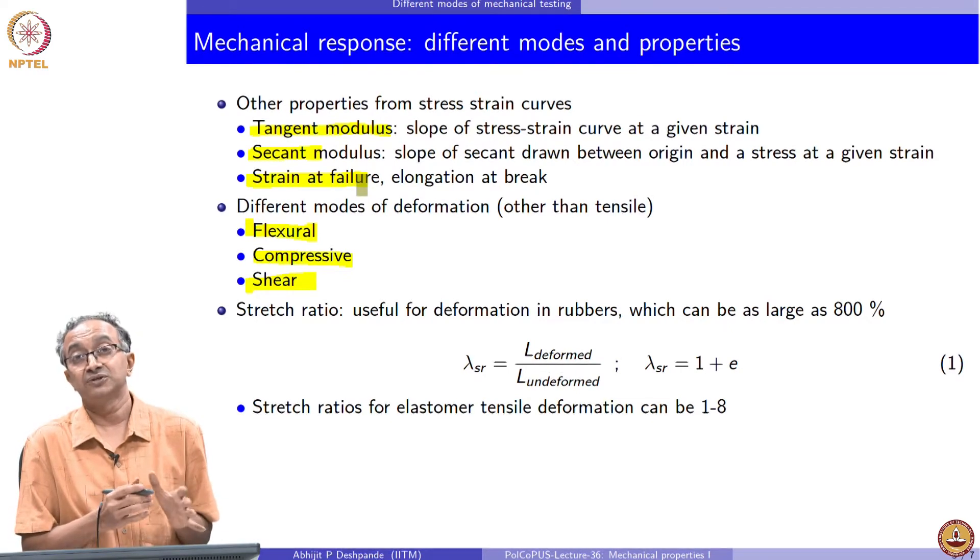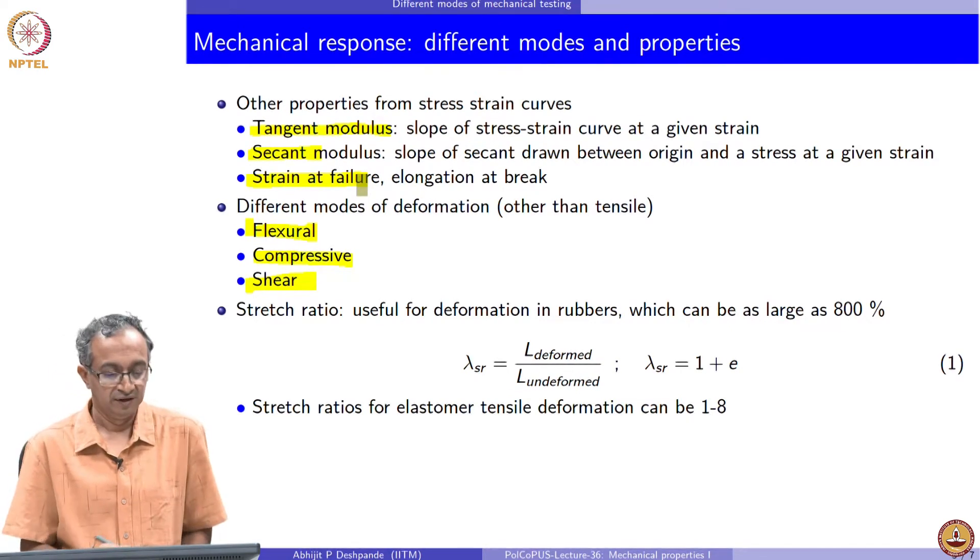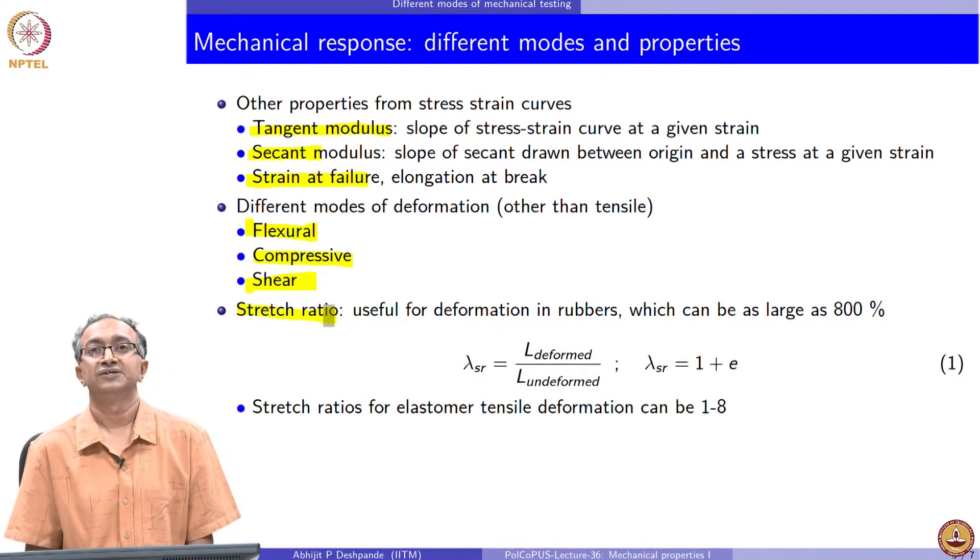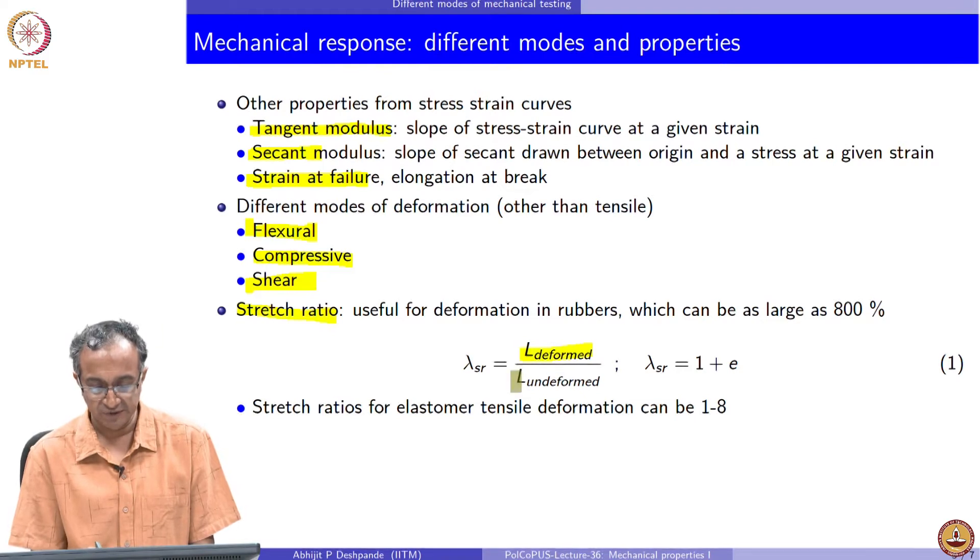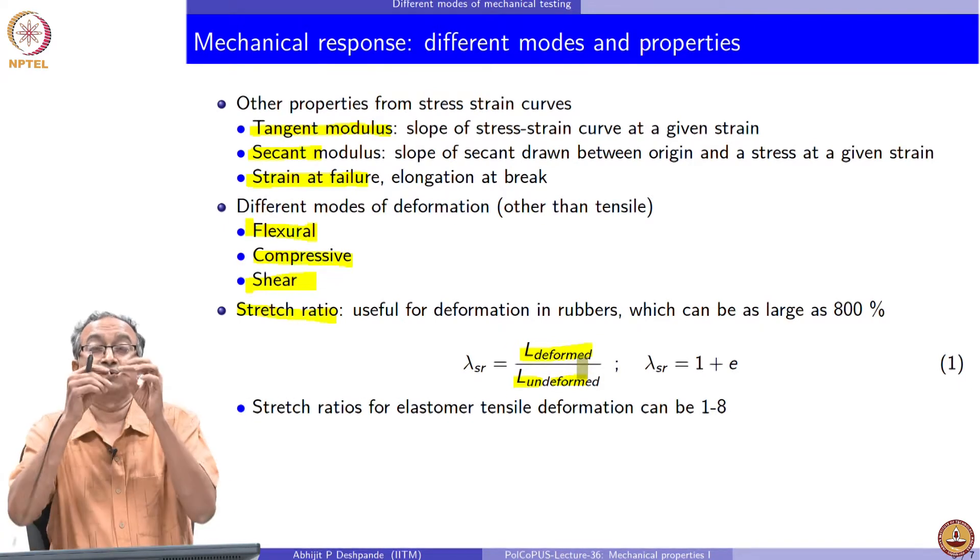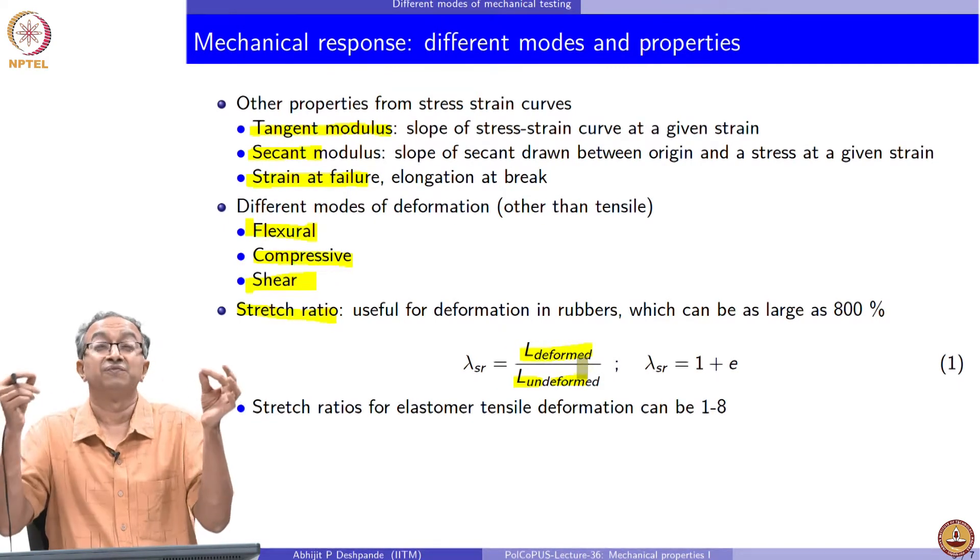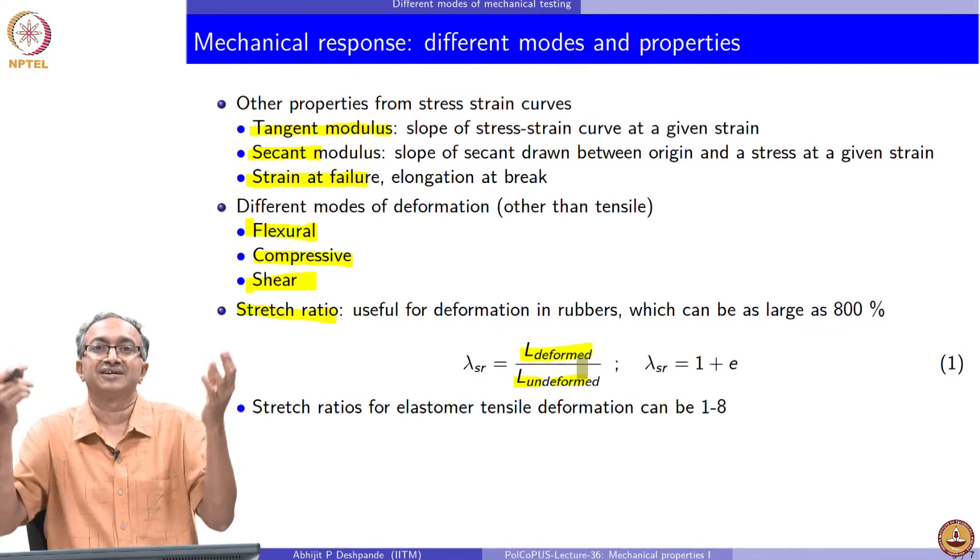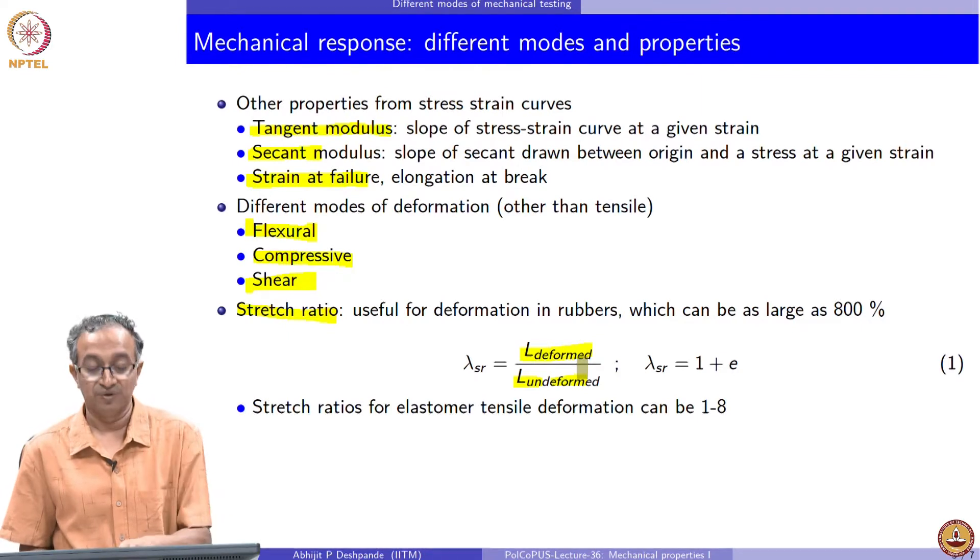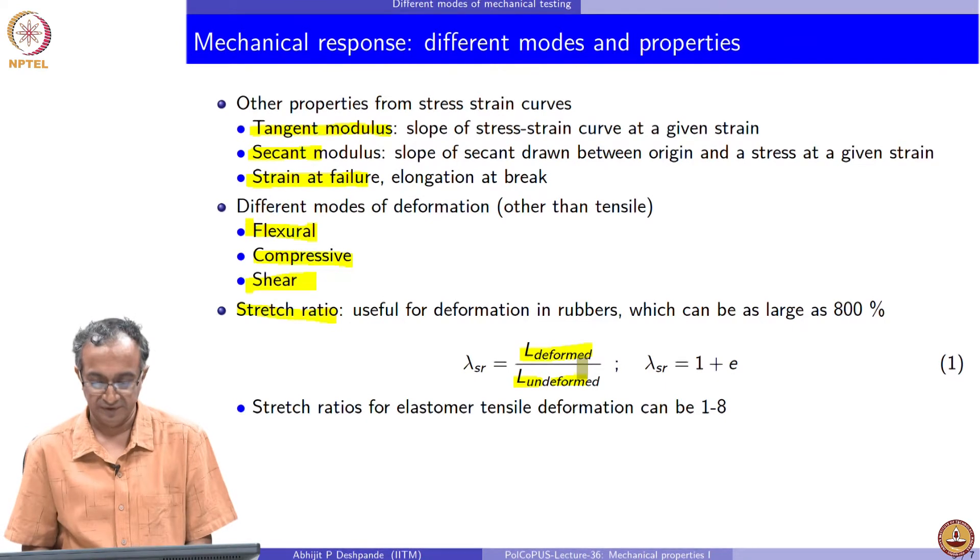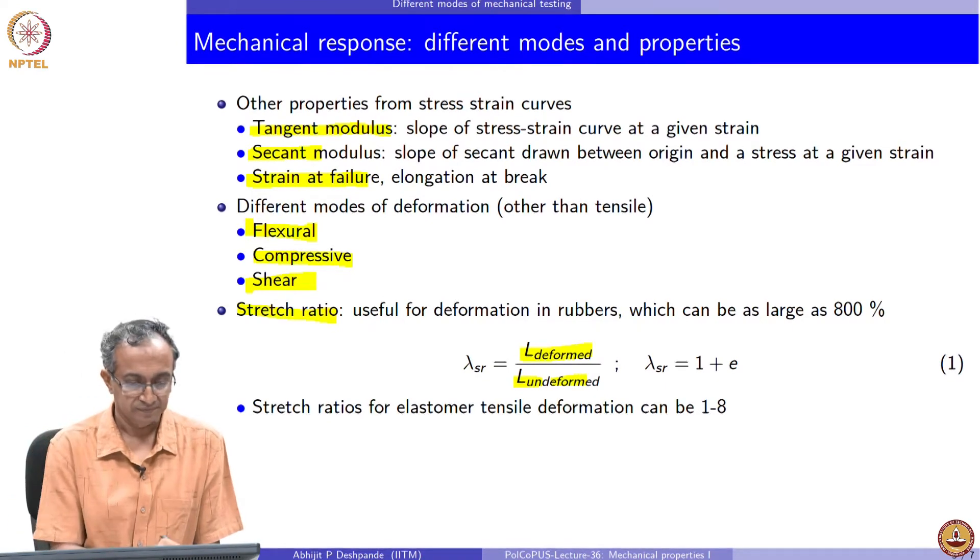Since in this lecture we will also discuss very large deformation, one useful quantity in addition to strain is called the stretch ratio. In this case, we look at the ratio of the deformed length versus undeformed length. The stretch ratio in case of rubber band for example can be 3 or 4 or even 5. We can stretch the rubber band to 5 or 6 times its original length. Rather than saying 600 percent strain, we say 6 as the stretch ratio.